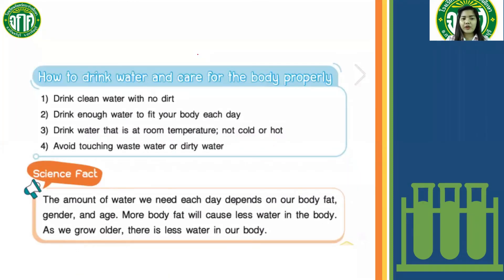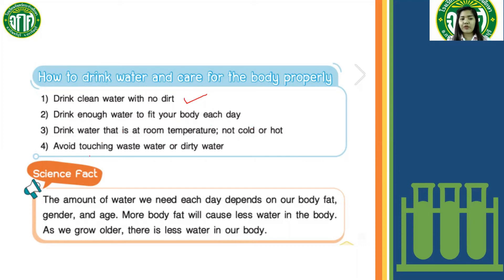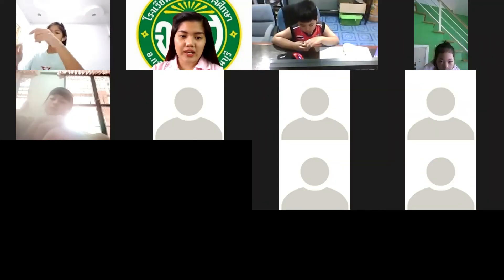How to drink water and care for the body properly: Number one, drink clean water with no dirt. Number two, drink enough water to fit your body each day. Number three, drink water that is at room temperature, not cold or hot. Number four, avoid touching wastewater or dirty water.